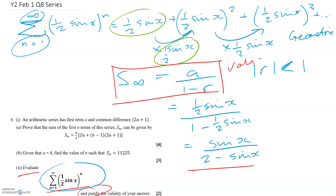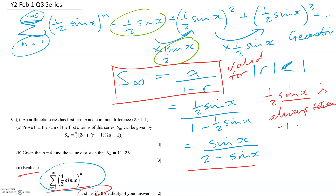The question asks us to justify the validity. The formula is only valid if the modulus of r is less than 1. Since sin x is always between −1 and +1, (1/2)sin x is always between −1/2 and +1/2, so its modulus is always less than 1. Therefore the formula is valid.